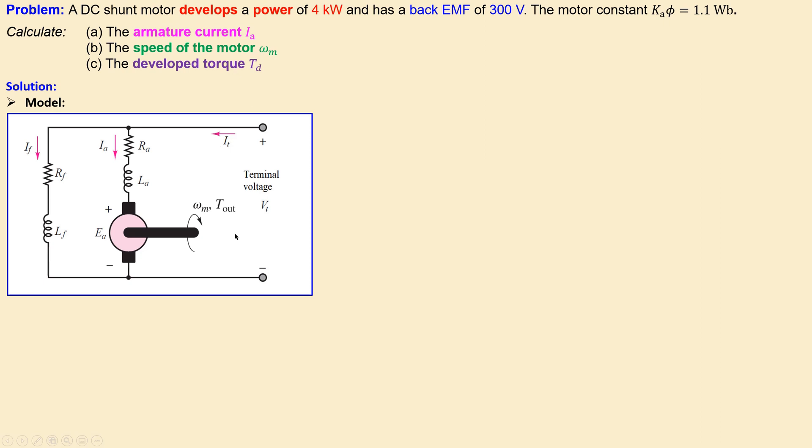Okay let's look at our given information in great detail. Given information here is developed power which is then P_d is 4000 watts. We have also the back EMF which is the developed voltage, actually here is 300 volts, and we have the motor constant which is just a constant, which is 1.1 webers.